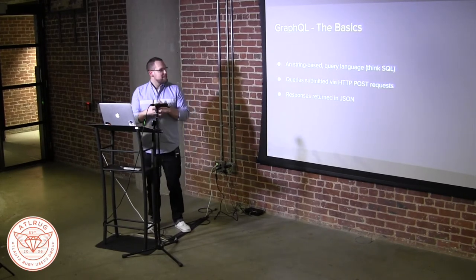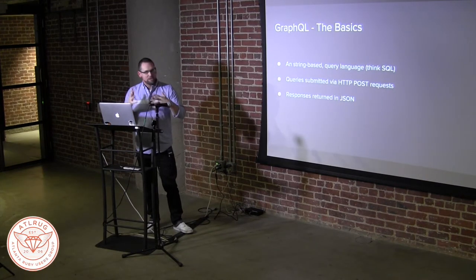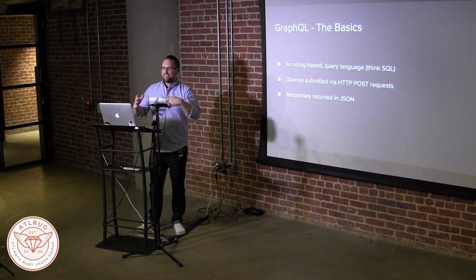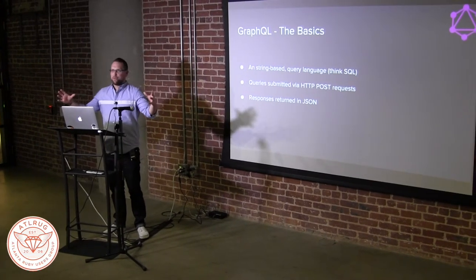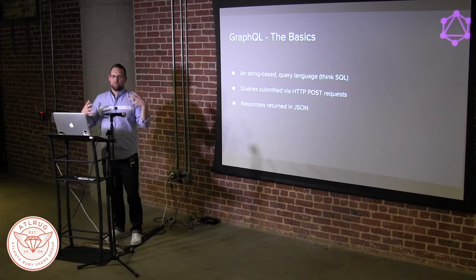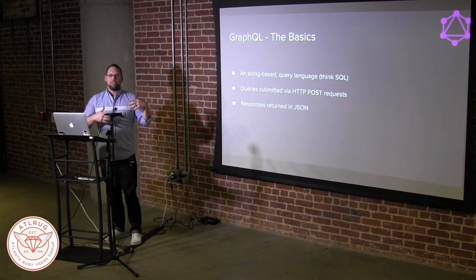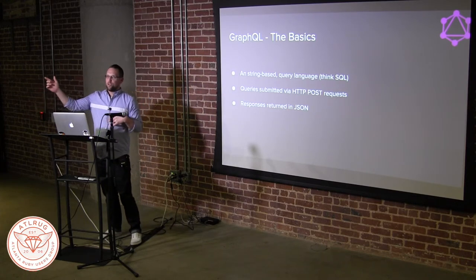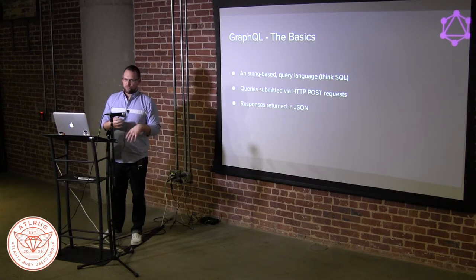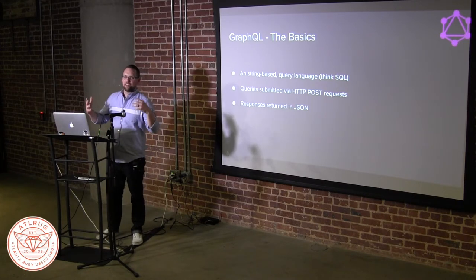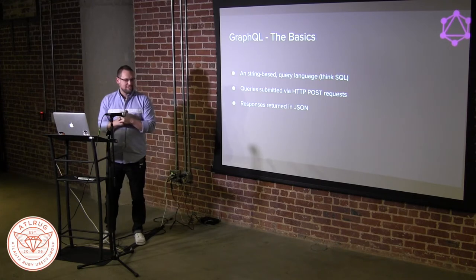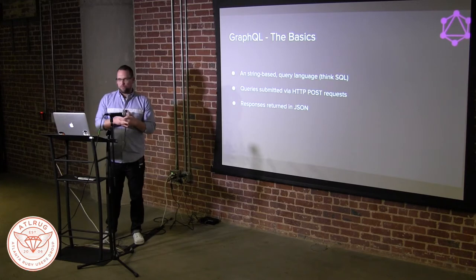So why is it a big deal? Basically, GraphQL is a string-based query language. If you've ever written SQL, you construct strings that tell you what you want out of the database and send them to your database server. GraphQL is that same mindset, but you're communicating over HTTP — primarily via HTTP POST requests. You post this string to your web server, it parses it out, and constructs the data your front end needs — whether it's Ember, Angular, React, or jQuery — because it returns exactly the data that you need. The responses are returned in JSON.